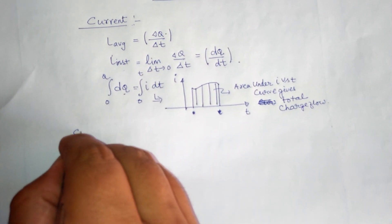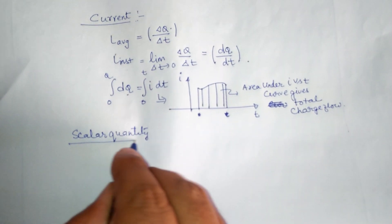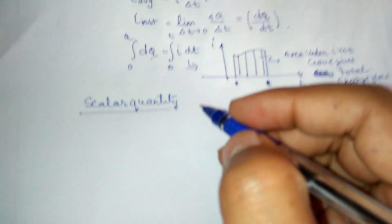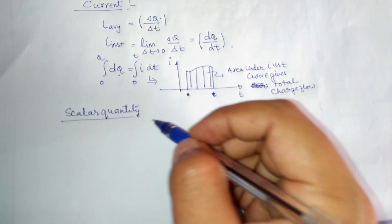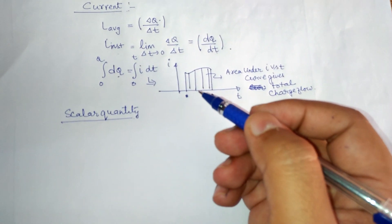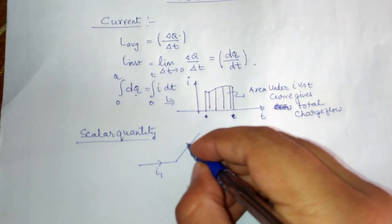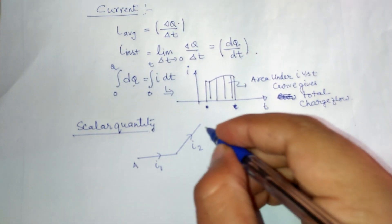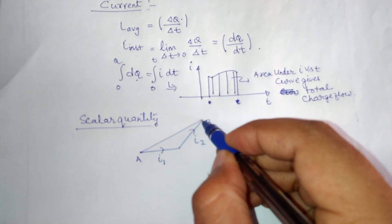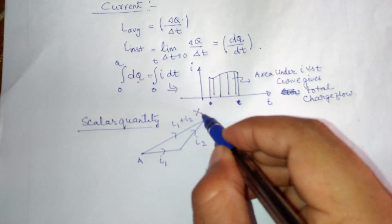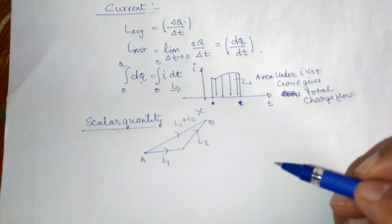The second important thing regarding current is that current is a scalar quantity. Although current has magnitude and direction, it is a scalar quantity. Why? Because current does not follow the basic vector law — that is, the triangle law of vector addition. For example, if we have a wire with current i1 and another wire with current i2 arranged in a certain fashion, a wire joining point A and B does not have current i1 plus i2. So current is a scalar quantity because it does not follow the triangle law of vector addition.